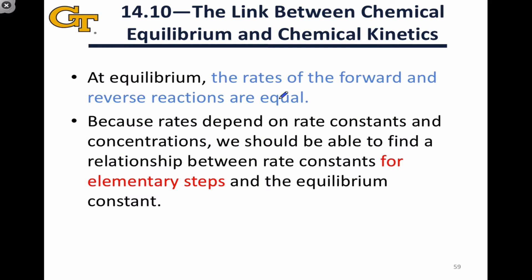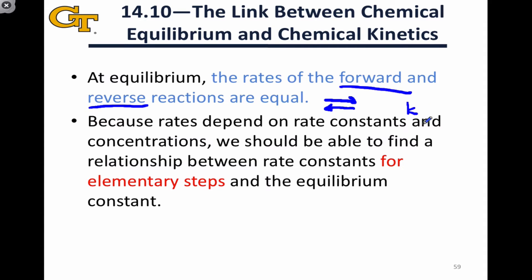We've defined chemical equilibrium so far as the situation in which the rates of the forward and reverse reactions are equal, and we often represent this using forward and reverse arrows of the same length to indicate a system at equilibrium. But reaction rates depend on rate constants, that's lowercase k values, and concentrations according to the rate law.